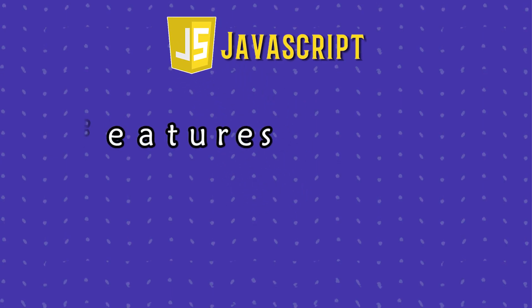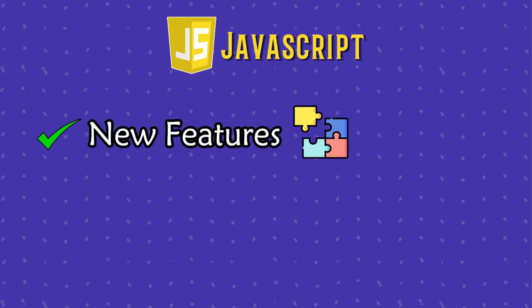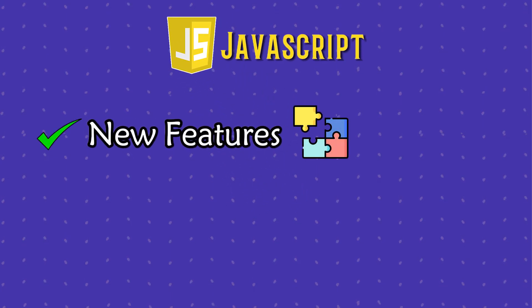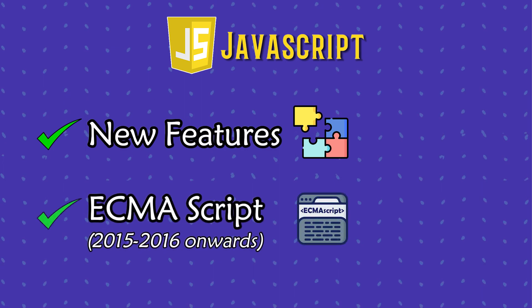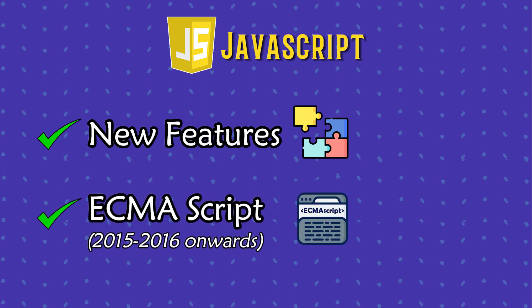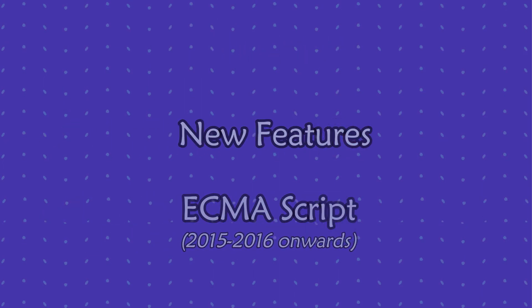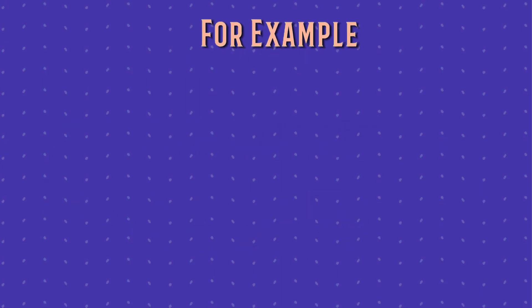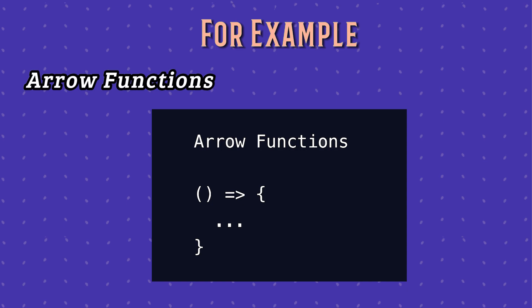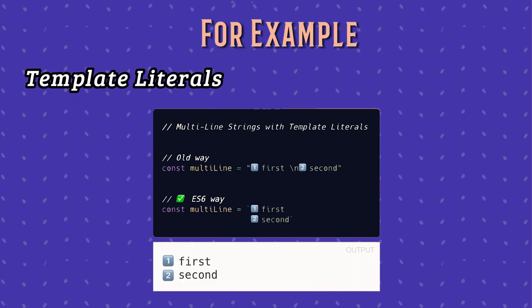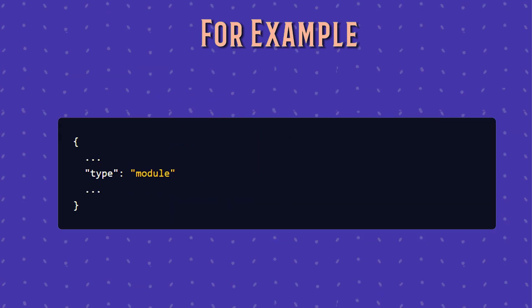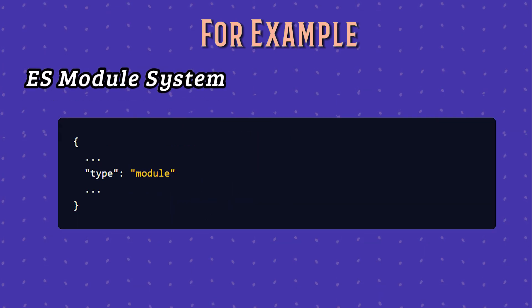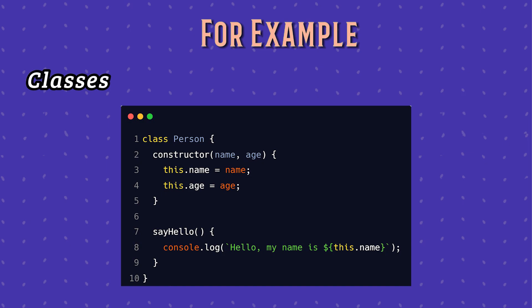If you know JavaScript, then you know that a lot of new features have been added into JavaScript since 2015 and 2016 as part of ECMAScript updates. To name a few: arrow functions, template literals, promises, fetch API, ES module system, classes, etc.